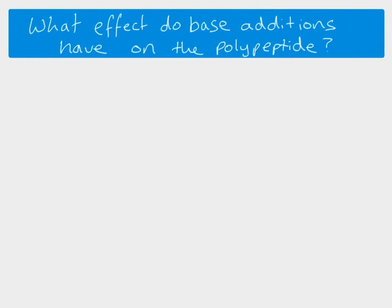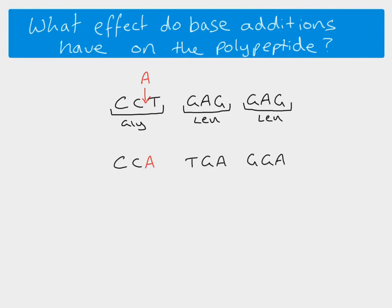What about the effect of base additions? These tend to have much bigger effects. Here is our initial sequence, and we're going to add our base A in there. From what we saw before, we now see that we've now had this shift, because this T used to be part of the first codon, it's now shifted to the second. This G used to be part of the second codon, it's now shifted to the third. So adding this base in has shifted everything down to the right. This can have a huge effect because this codon is changed, but all of the other codons are also changed.